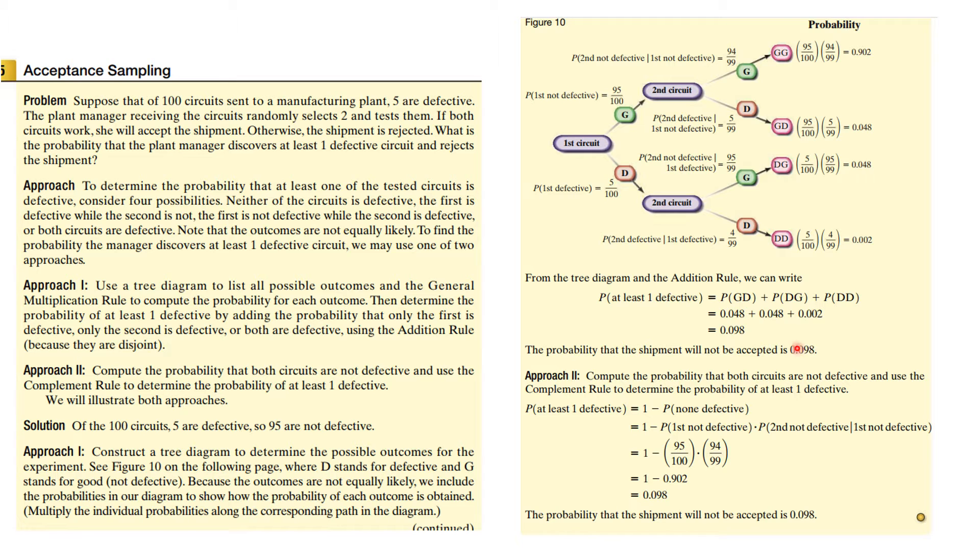Now we're going to discuss two approaches. The first approach is just to make a tree diagram. The first circuit is either good or defective, and then the second circuit that's chosen is either good or defective. What's the probability that the first is not defective? It is 95 out of 100 because there were 95 good and there were a total of 100. But then when you go to the second one, you actually have one fewer. So this is dependent on what happened with the first one. So here you would have 94 out of 99 because there are 99 remaining and there are 94 of them that are good. And when you multiply those two numbers together, you get this. And certainly those numbers get multiplied together because that is the general multiplication rule.